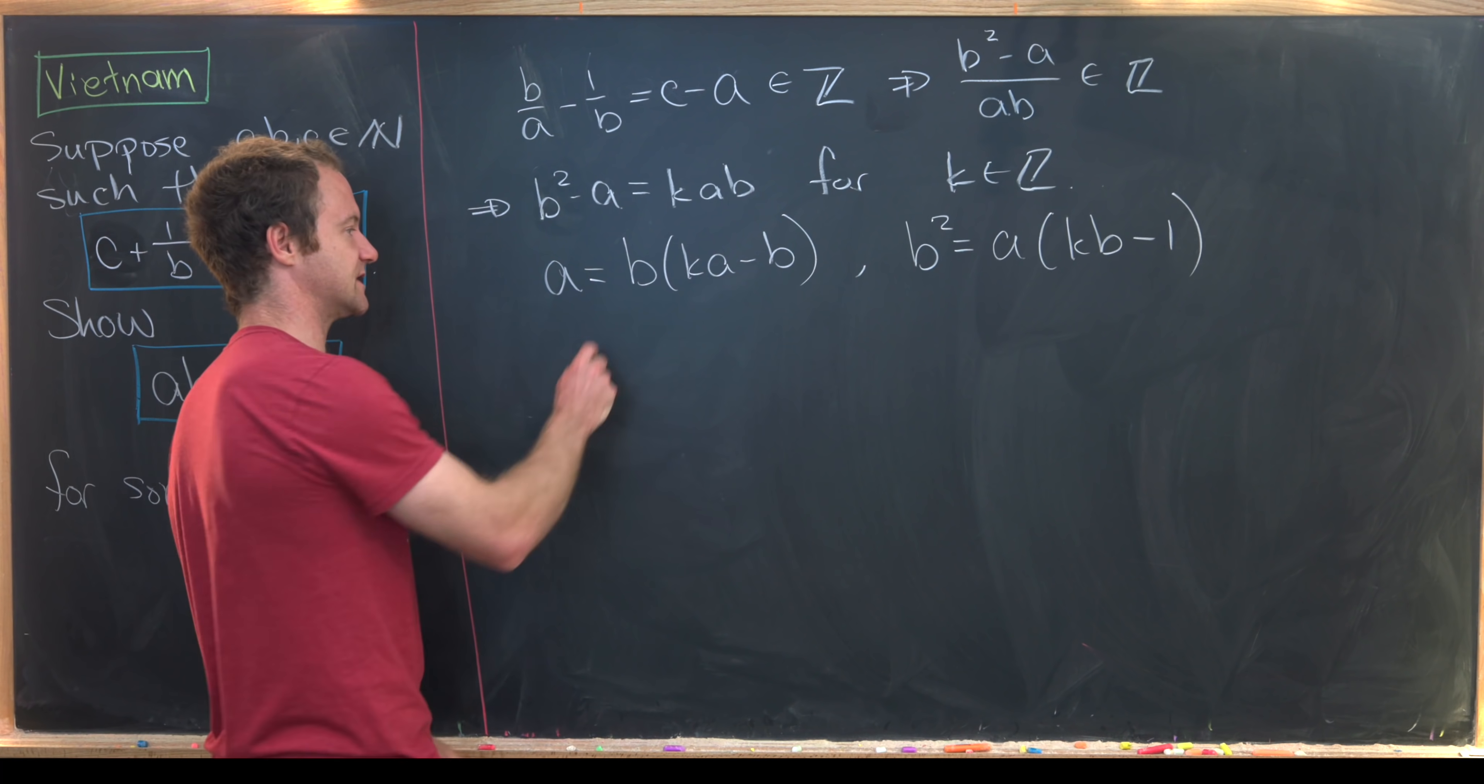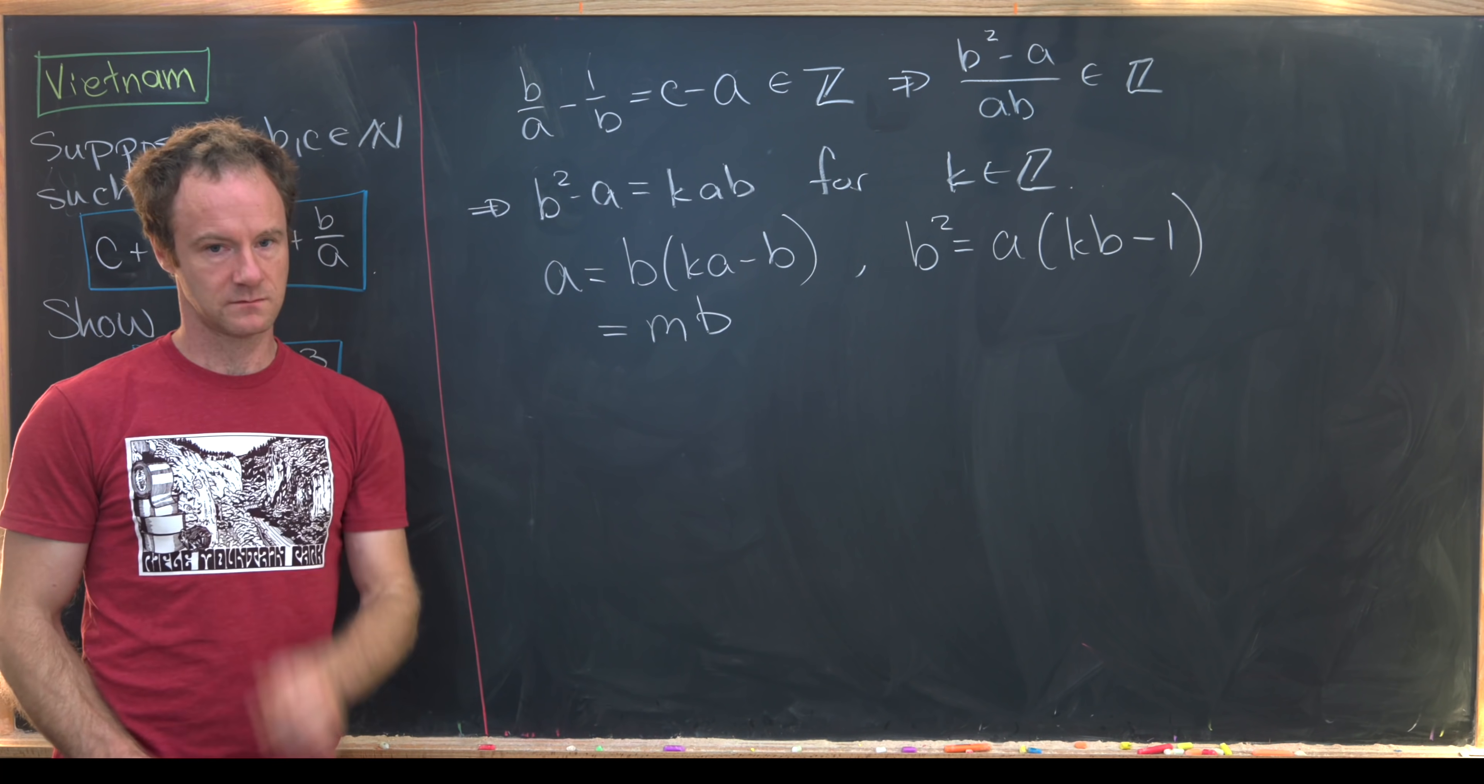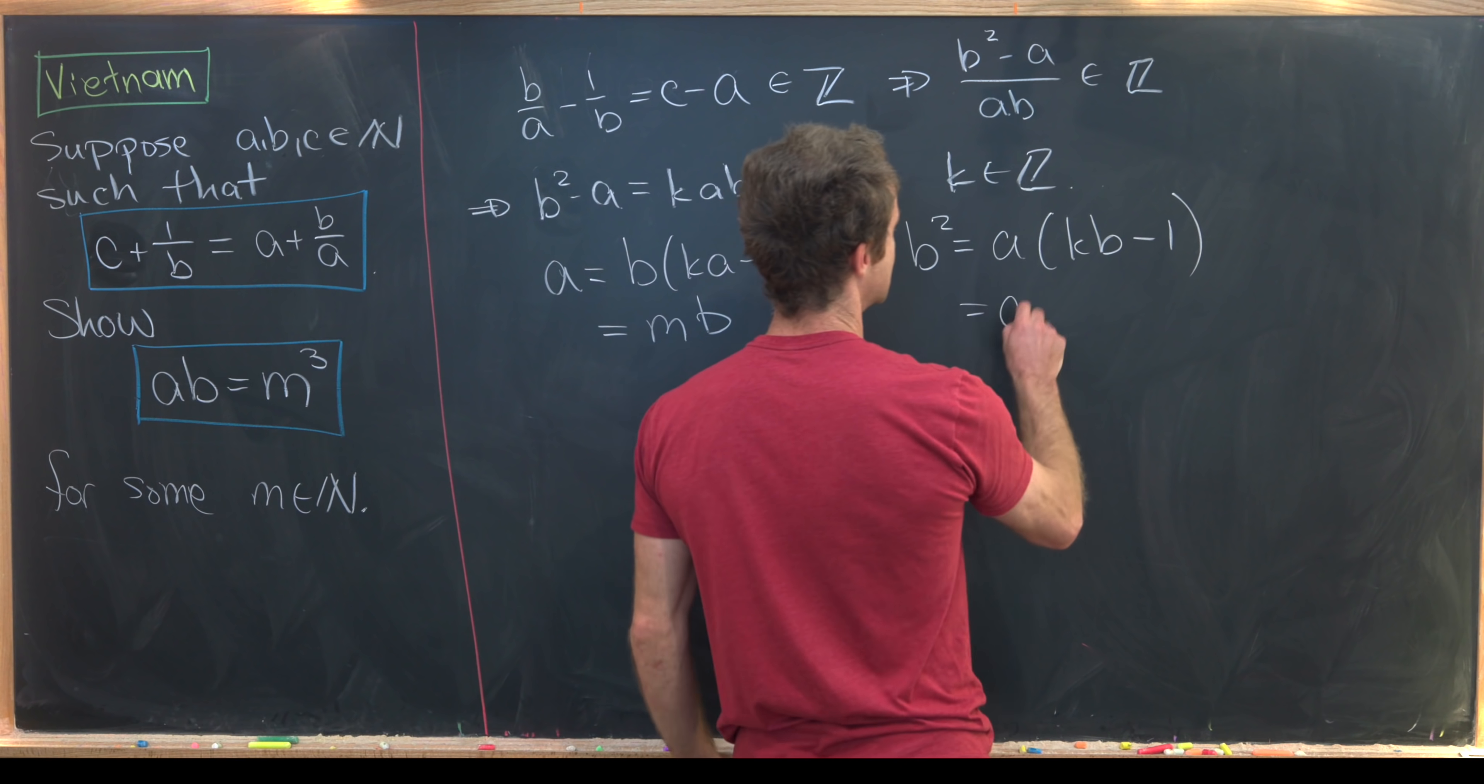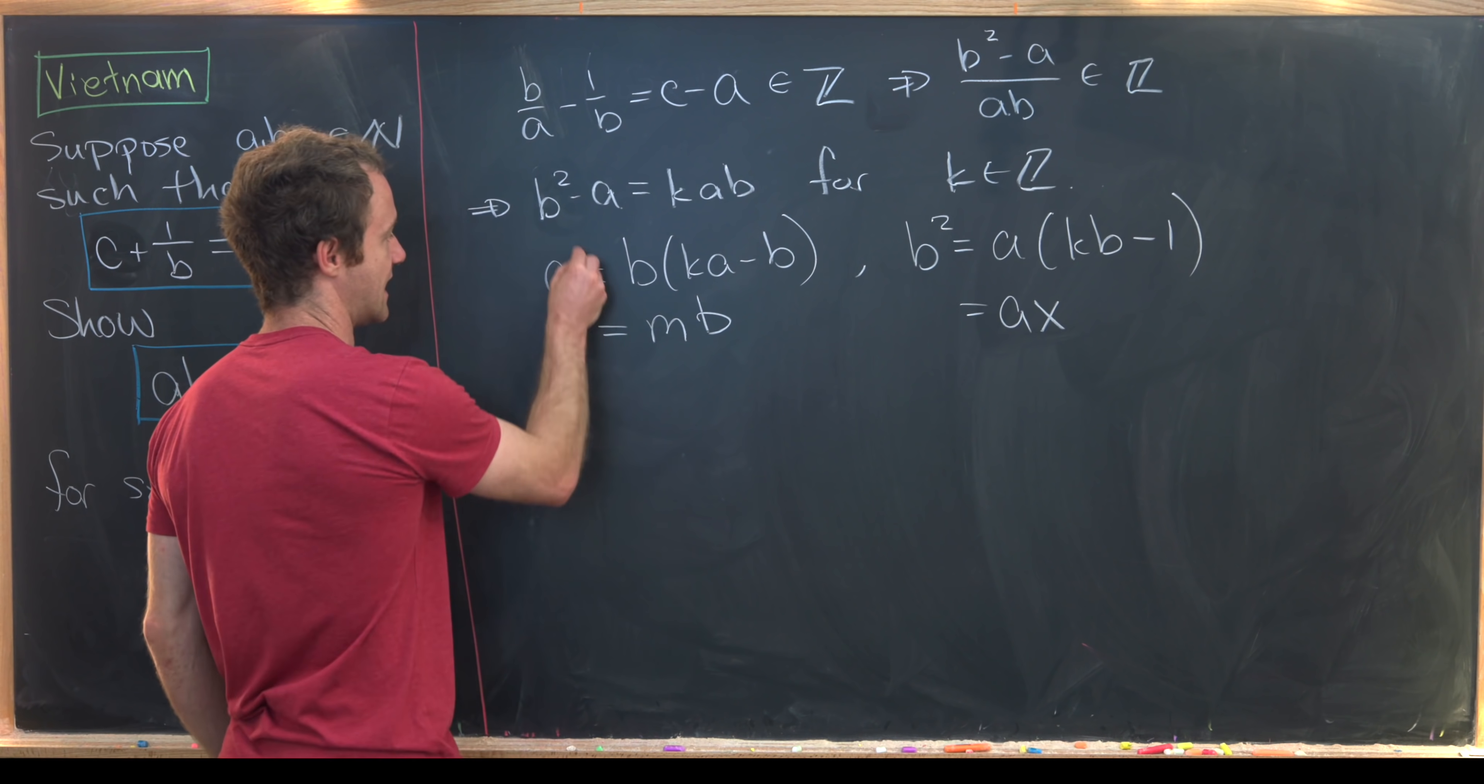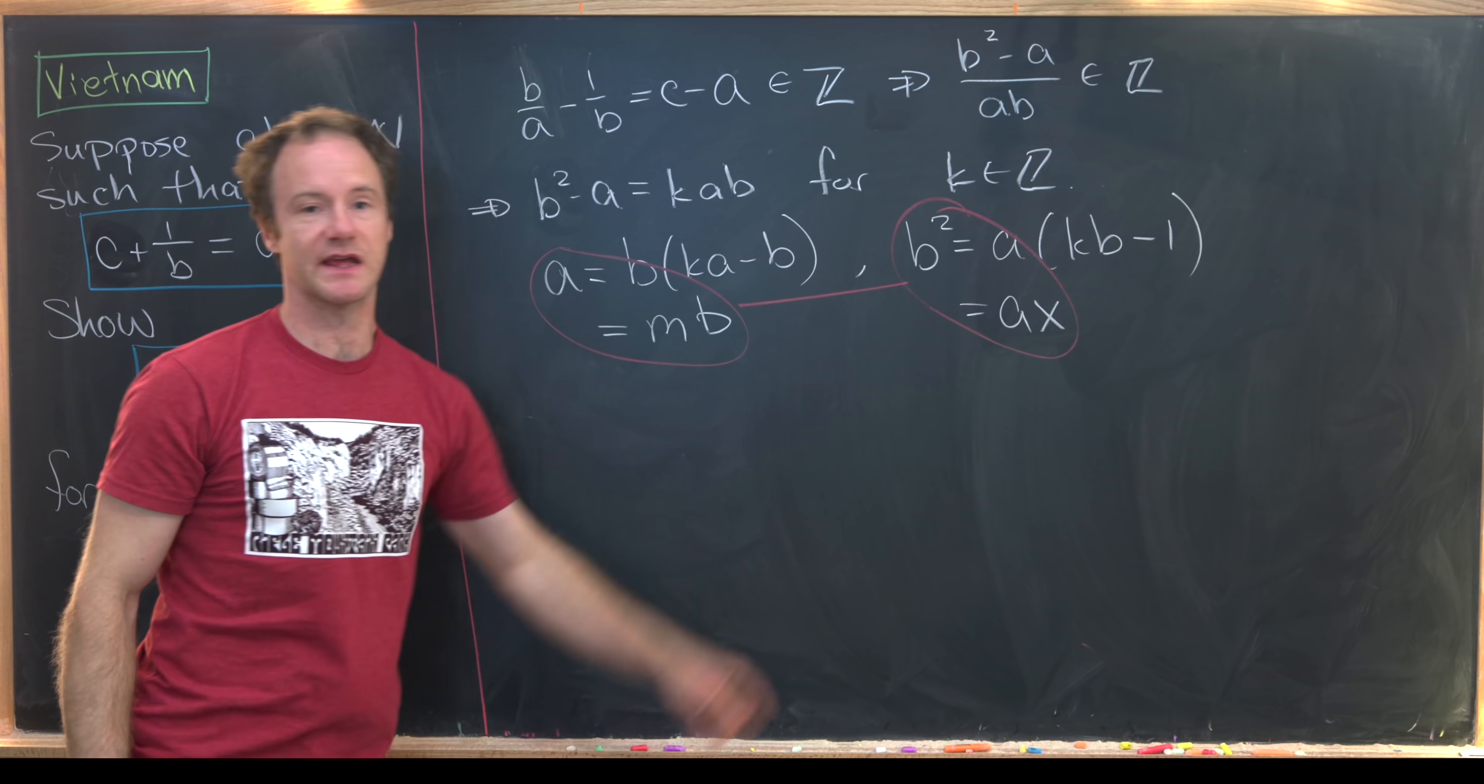Now I'm going to collapse these numbers together. So I'll rewrite this as M. So I have A is equal to M times B. And then likewise, I'll take this stuff and collapse it together into X. So we have B squared is equal to A times X. And so now I'll just go ahead and throw these two equations, which I have in red, together.